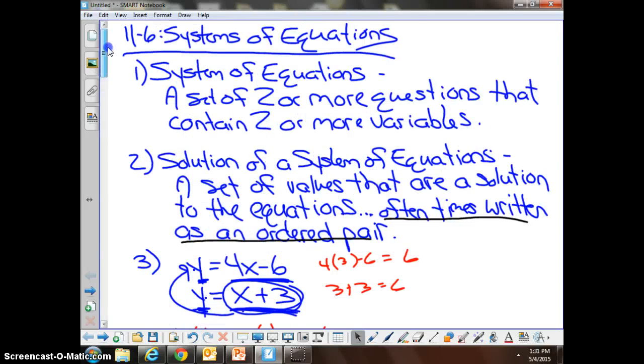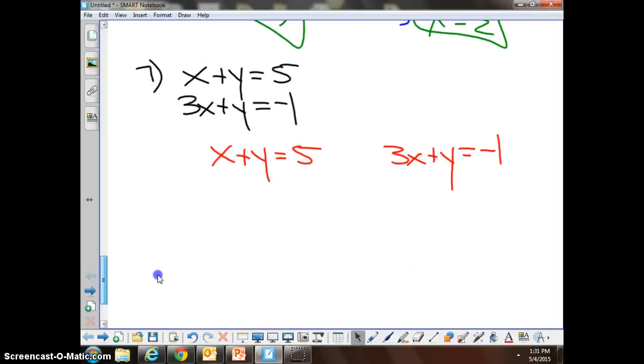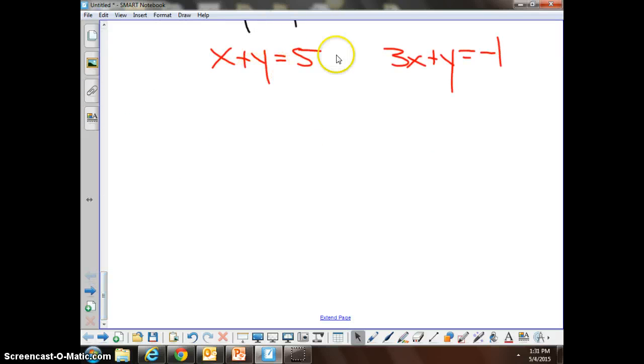Today we are doing our second problem on systems of equations, which is 11-6. We have the problem x plus y equals 5 and 3x plus y equals negative 1. We realize that we don't have a variable set equal to the rest of the problem. Therefore, we are going to write our two equations side by side so that we can get going into our steps.